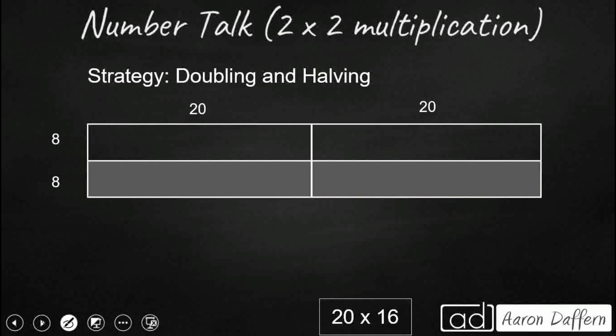We can also double and half, but we could go ahead and double our 20 instead of cutting it in half. So let's double our 20. That's going to get us 40, because I've got two of my 20s right here.